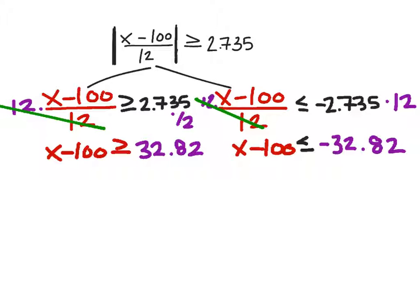That gives us this for both inequalities. After I multiply this by 12, I get 32.82. Here, negative 2.735 times 12, the negative 32.82. So they're just opposites right now. But this is where the difference will come in.